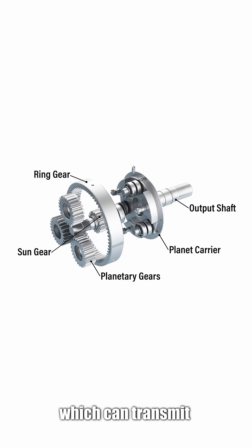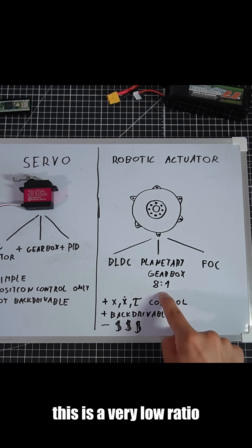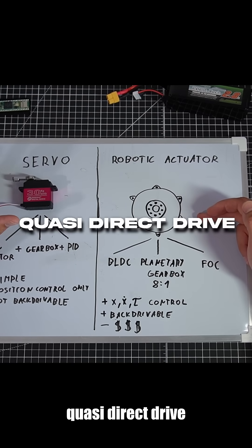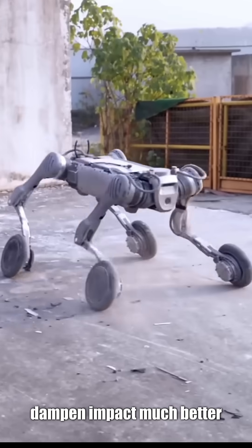It's a planetary gearbox, so this transmits a lot of torque. And it's an 8 to 1 reduction ratio. This is a very low ratio, which is why this actuator is called quasi-direct drive. With this low reduction, the robot can dampen impact much better.